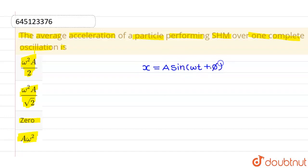Now we know that velocity will be given by rate of change of displacement with respect to time. So this will be nothing but A omega cos omega t plus phi.